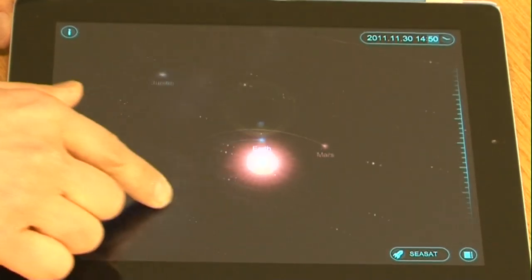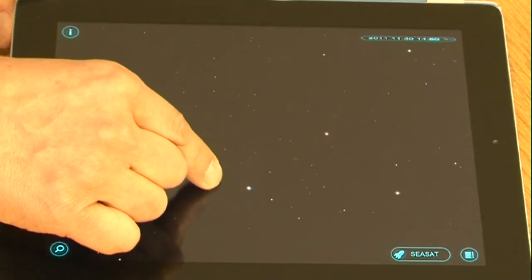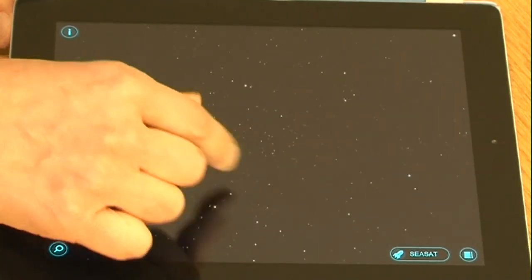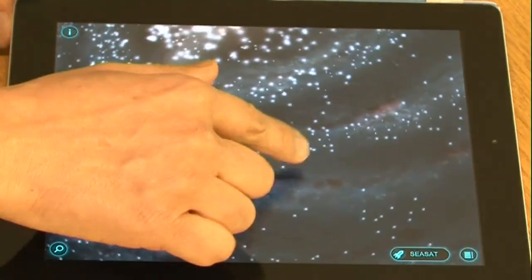Continue to zoom out, we'll see the Sun, Mars, Jupiter, all of the other planets. Continue to zoom out and see the further planets, continue to zoom out until you see our universe.